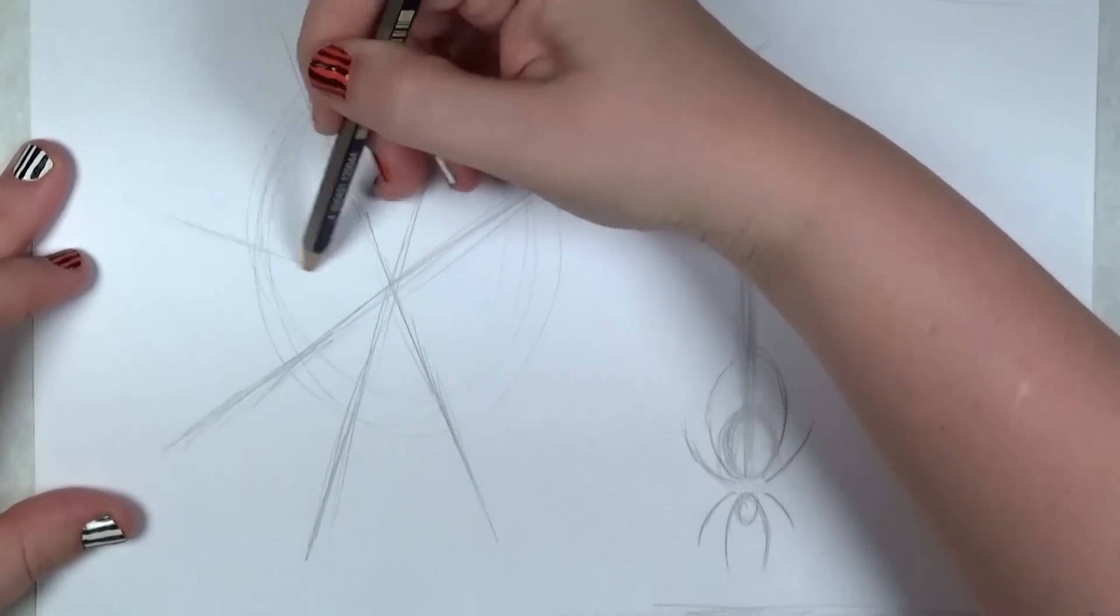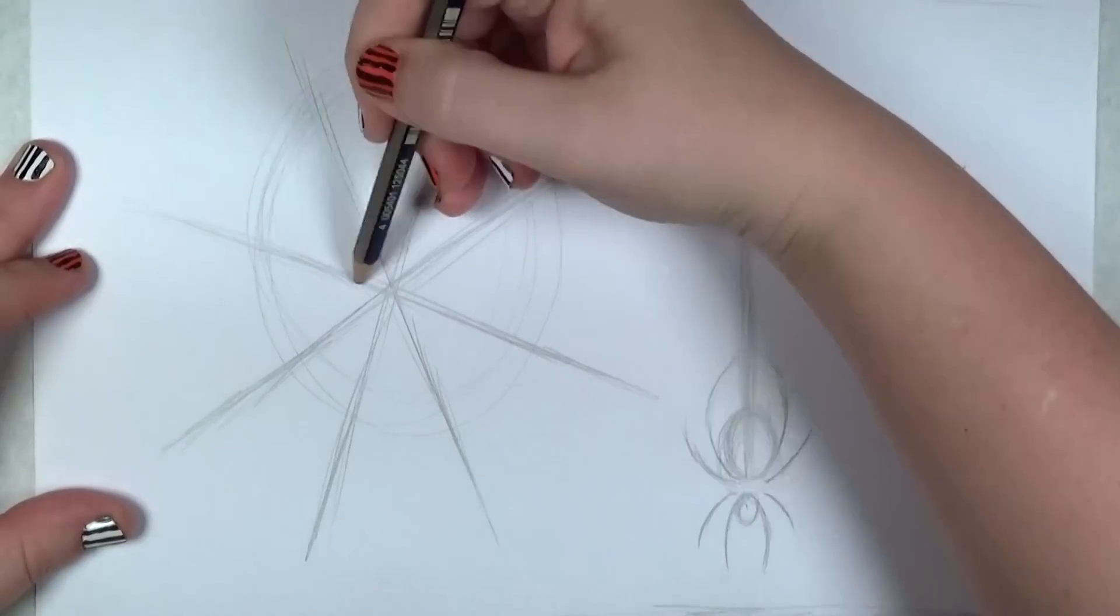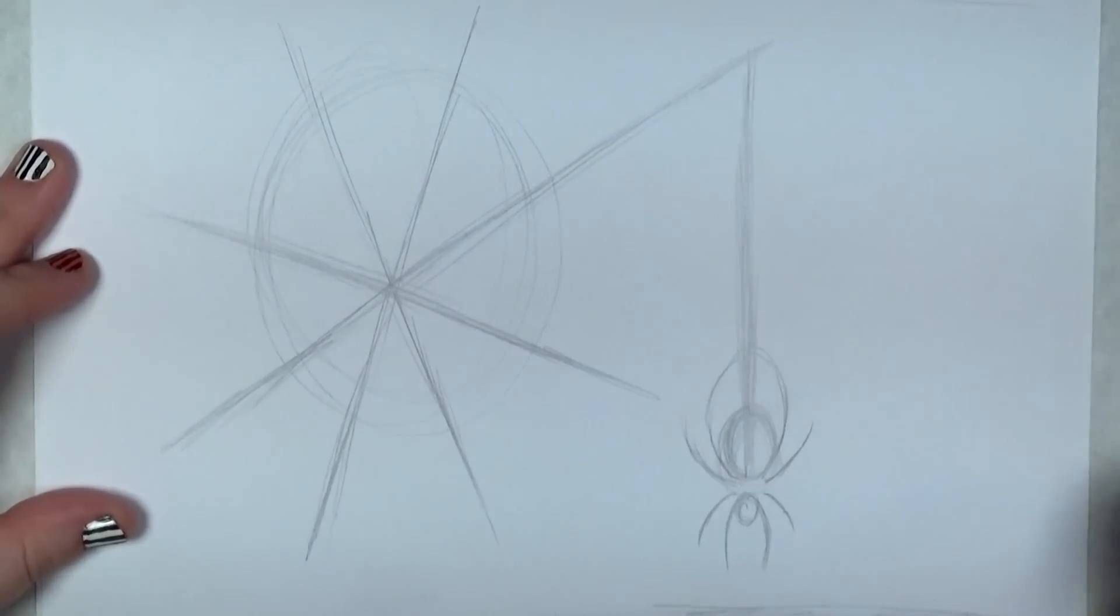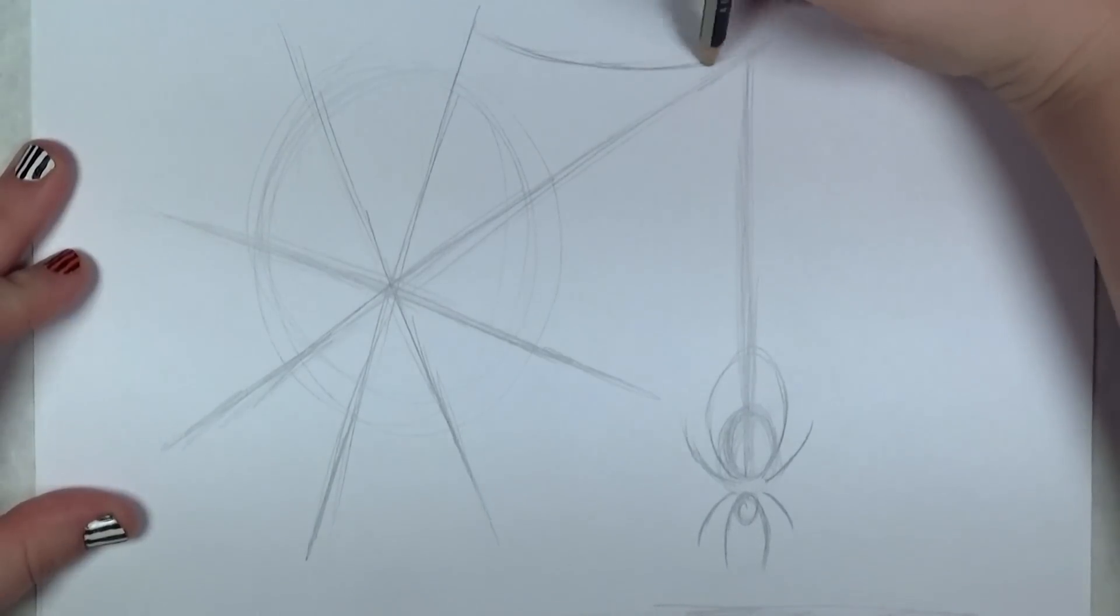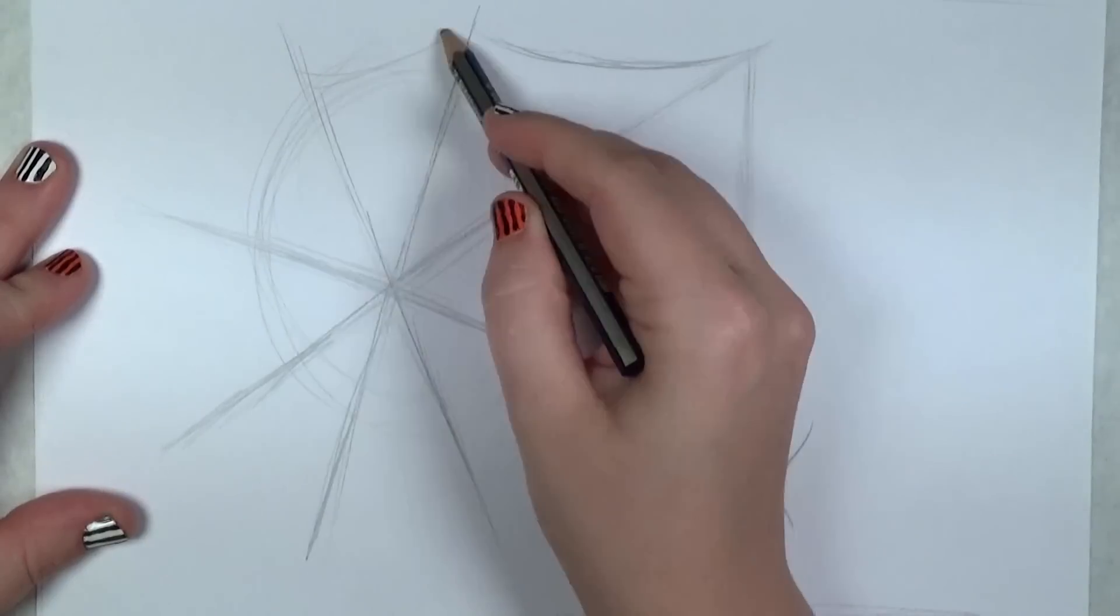Too much symmetry can be kind of boring, so this is an asymmetrical drawing. This line here that you see me drawing points right back to the spider, which gives a nice composition to the whole piece.